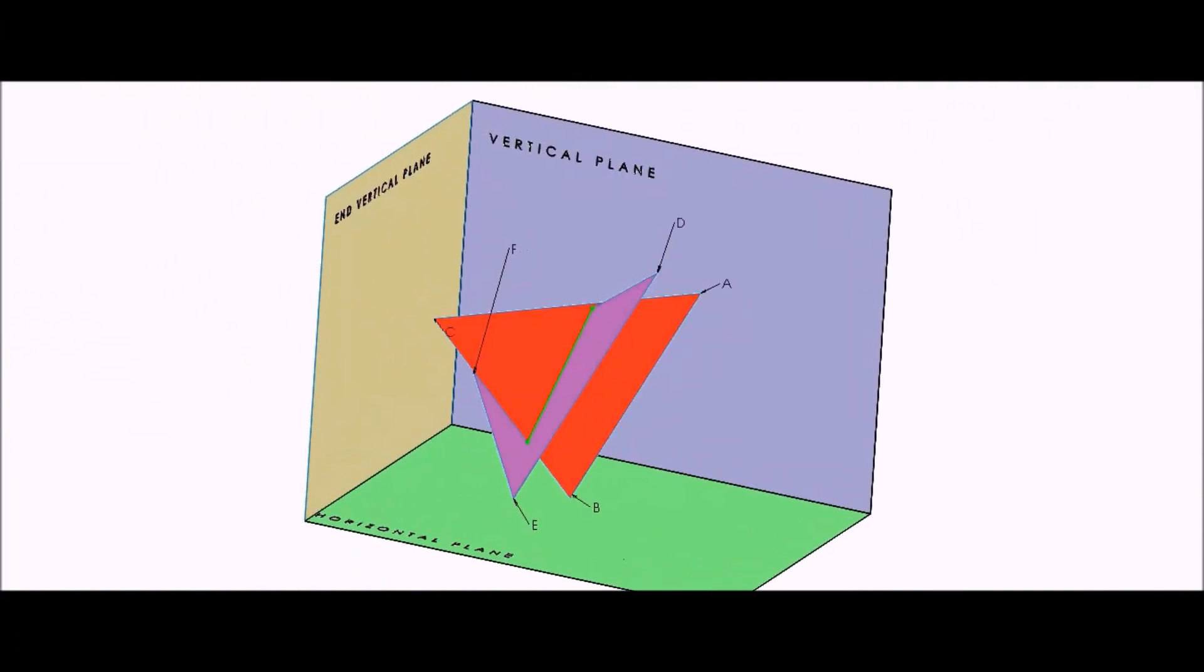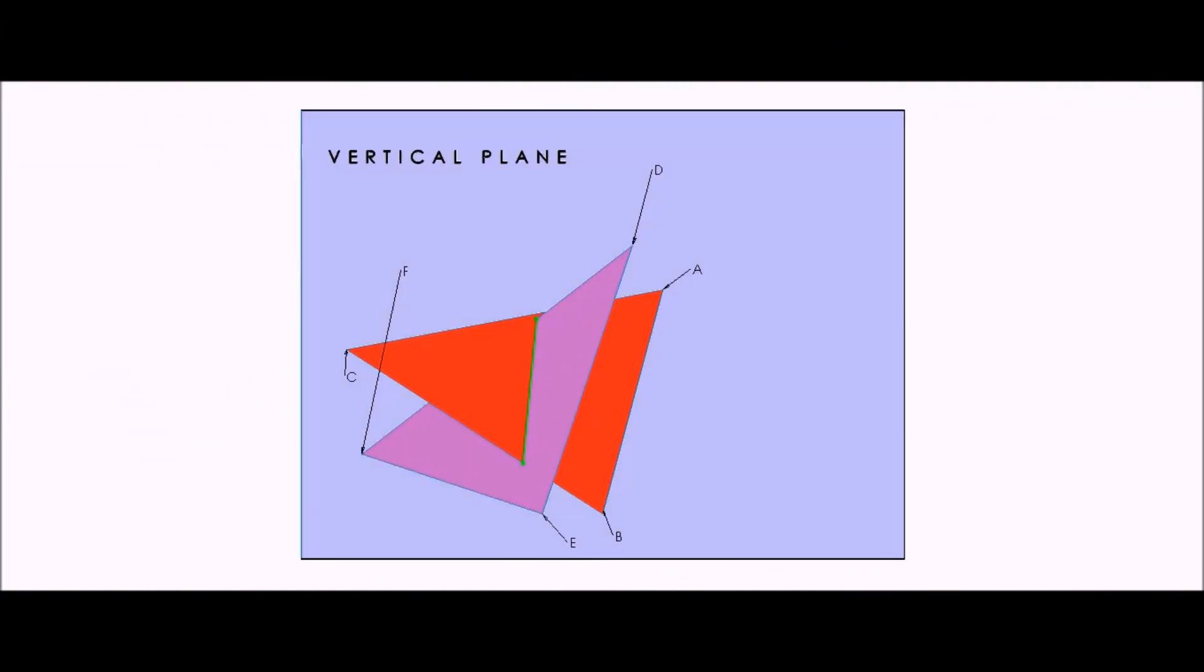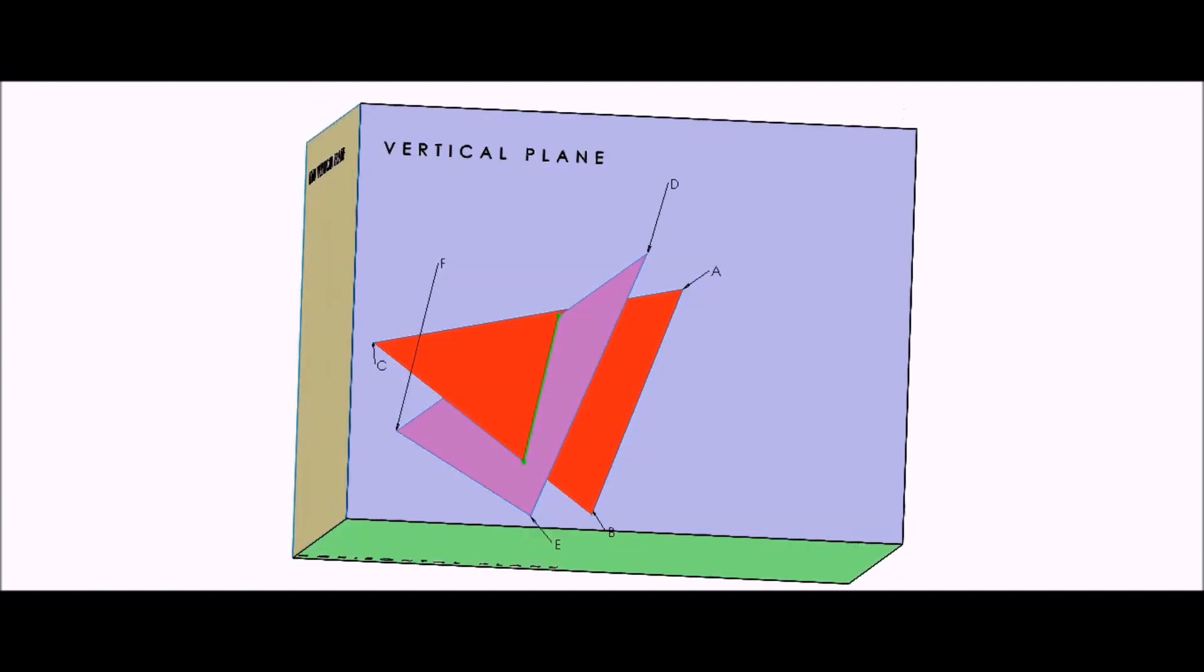The SolidWorks model gives us a 3D representation of what the planes and line of intersection look like.